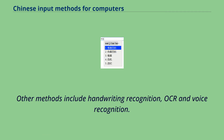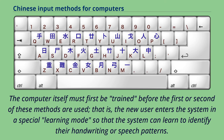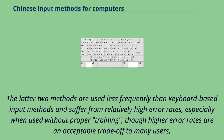Other methods include handwriting recognition, OCR, and voice recognition. The computer itself must first be trained before the first or second of these methods are used — that is, the new user enters the system in a special learning mode so that the system can learn to identify their handwriting or speech patterns. The latter two methods are used less frequently than keyboard-based input methods and suffer from relatively high error rates, especially when used without proper training, though higher error rates are an acceptable trade-off to many users.